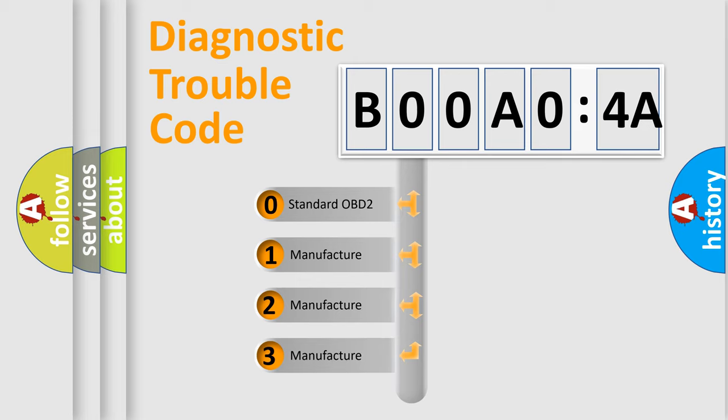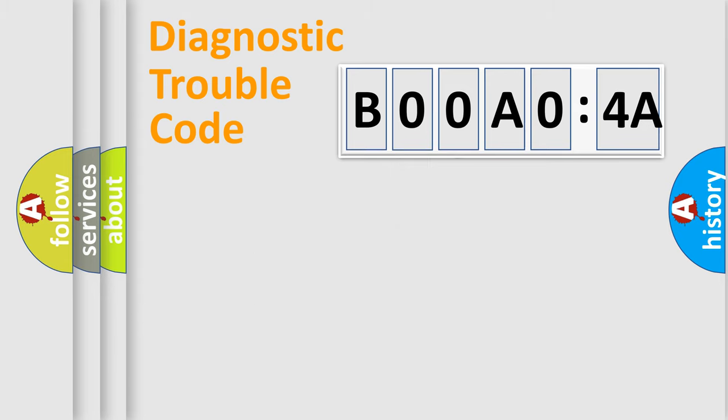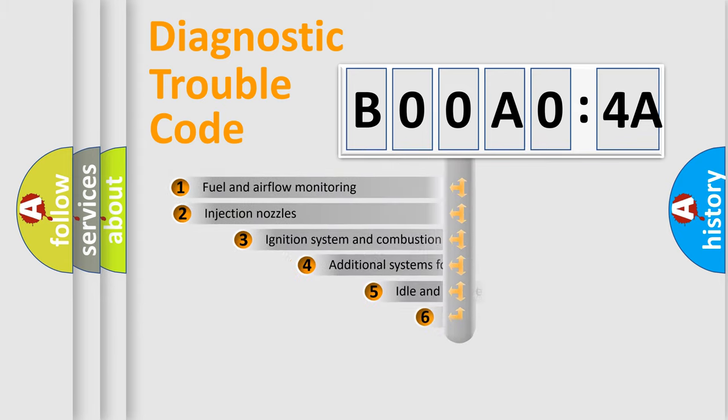If the second character is expressed as zero, it is a standardized error. In the case of numbers 1, 2, 3, it is a more prestigious expression of the car-specific error.